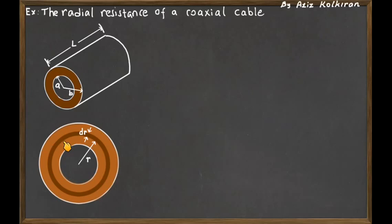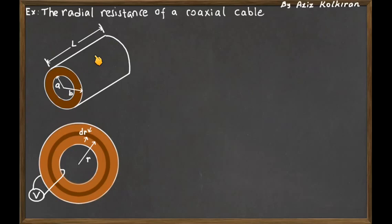If we can express the resistance of each infinitesimally thin shell, the total resistance of the hollow cylinder is just the sum — or integral — of all these shell resistances. When we apply the potential difference between the inner and outer surfaces, each surface is at constant potential, and the current flows radially outward as shown by the arrows.